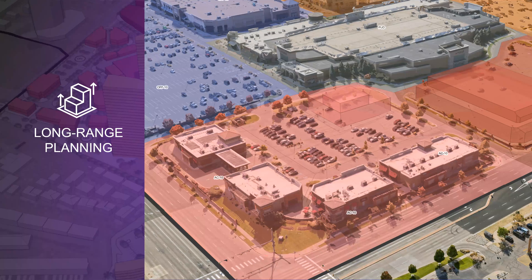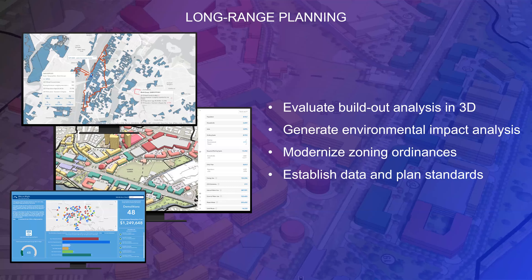Ensuring we approach sustainability, equity, and public input — which is community input — in a comprehensive way will also be very important. One element of long-term planning is being able to evaluate build-out analysis in 3D. The 3D perspective is very key because you can see how the developments you're looking at will affect the existing ecosystems. If it's a building, how will it impact road networks? How will it impact the natural ecosystem? That is very important when trying to visualize and understand things from a 3D perspective.